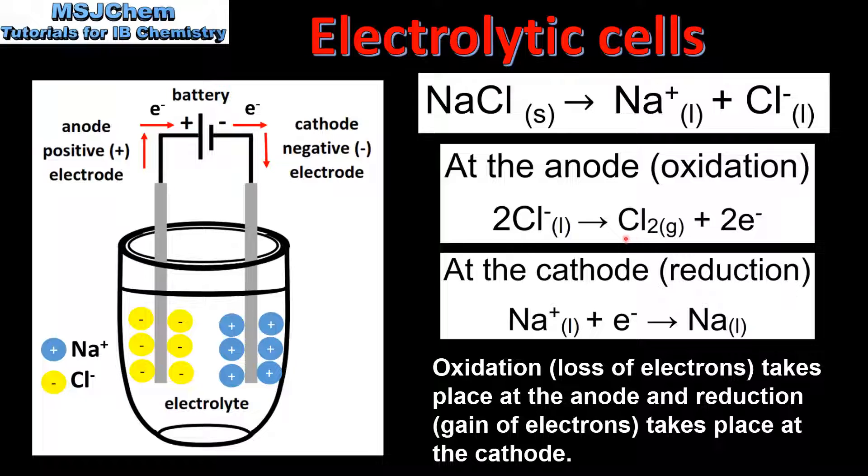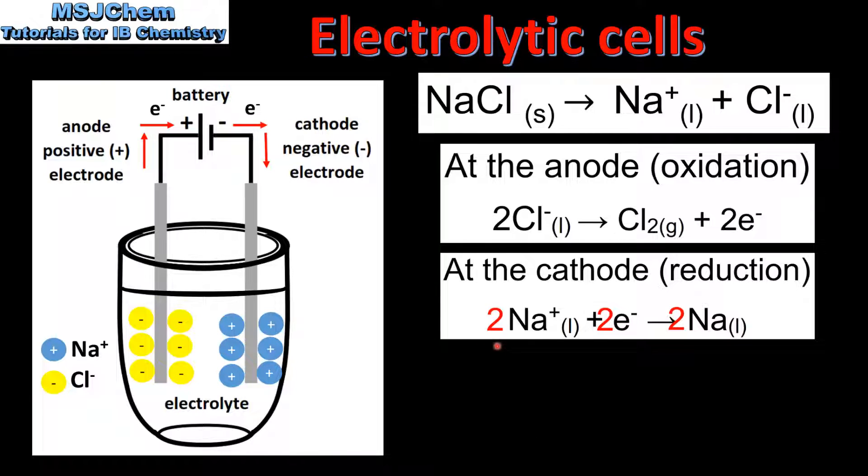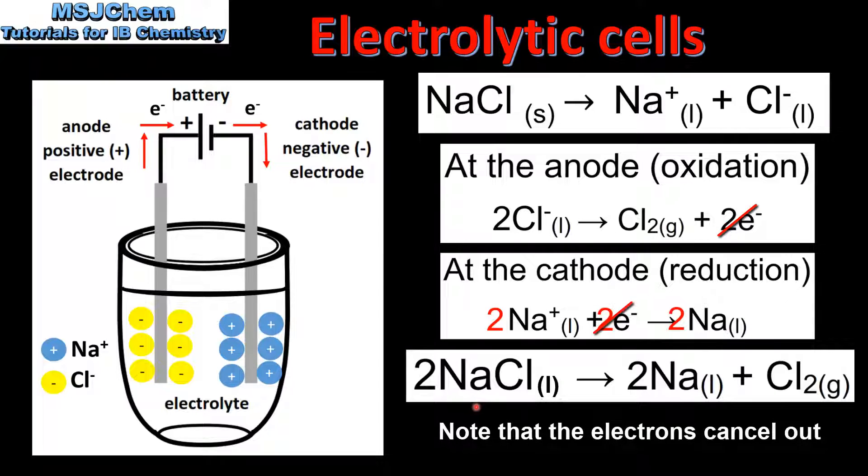So at the anode we get chlorine gas produced and at the cathode we get liquid sodium produced. The number of electrons in each half equation must be the same, therefore we multiply everything in this half equation by 2. This gives us the overall equation for the reaction, and as we can see, the molar ratio of sodium to chlorine is 2 to 1.